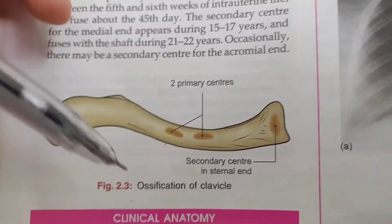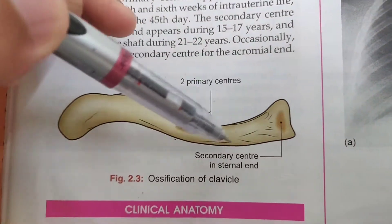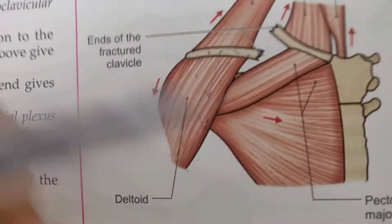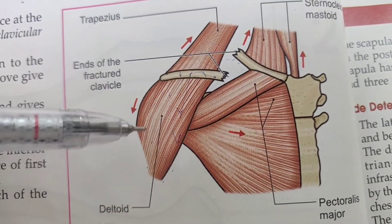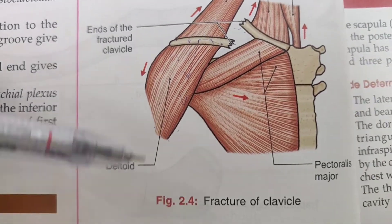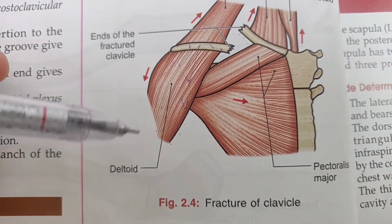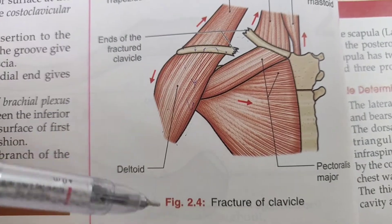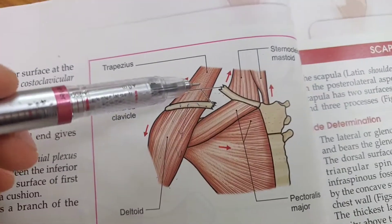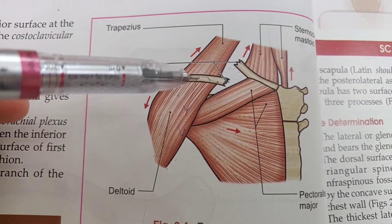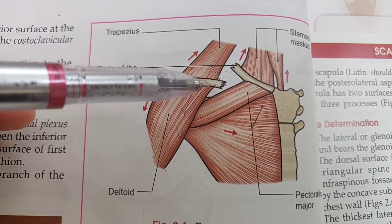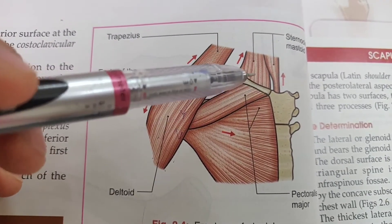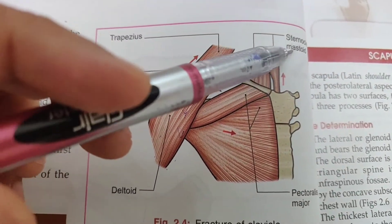...the lateral part is pushed downwards and the medial part is pushed upwards. The lateral part is connected to the deltoid muscle and to the upper limb, so due to the weight of the upper limb the lateral part is pushed down. The trapezius muscle is able to keep the bone in place, whereas the medial part is pushed up due to the sternocleidomastoid muscle.